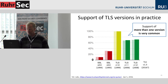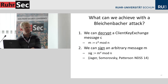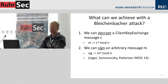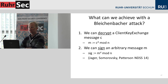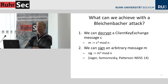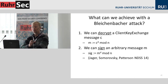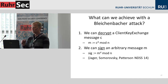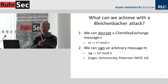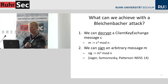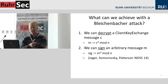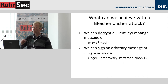One surprising thing — it was surprising to me when Tibor and Juraj explained it — is that typically with a Bleichenbacher attack you try to decrypt something. But RSA has a nice property: decryption and signing are the same operation. So if you have a Bleichenbacher weakness, you can also sign arbitrary messages — instead of decrypting, you sign them. This was discovered by Jager, Somorovsky, and Patterson and published at NDSS 2014. This forms the basis of the attack: using the Bleichenbacher oracle not to decrypt but to sign messages.